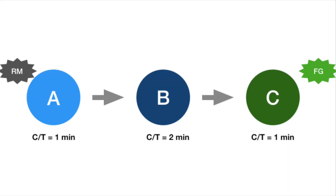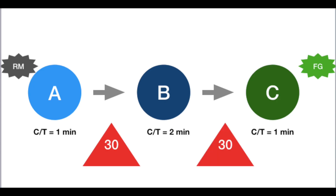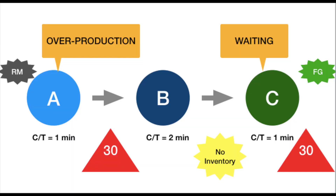There is another form where internal suppliers produce more than the internal customers demand. For example, imagine three processes A, B, and C. Process A has a cycle time of one minute per piece, B is two minutes per piece, and C is one minute per piece. After one hour, A completes 60 pieces, but B can only do 30. So B processes 30 and sends them to C, leaving 30 pieces waiting between A and B — meaning A has overproduced relative to its internal customer B. C receives 30 from B but can produce 60, so for every other minute C has no input and must wait.